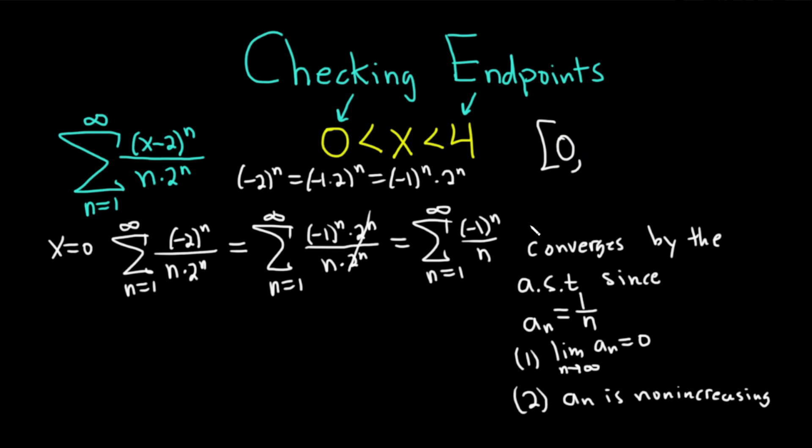So because it converged, we include the 0. These problems require a ton of knowledge. When you first study this stuff, it's a lot. So then x equals 4. But think about it, we're already halfway there.